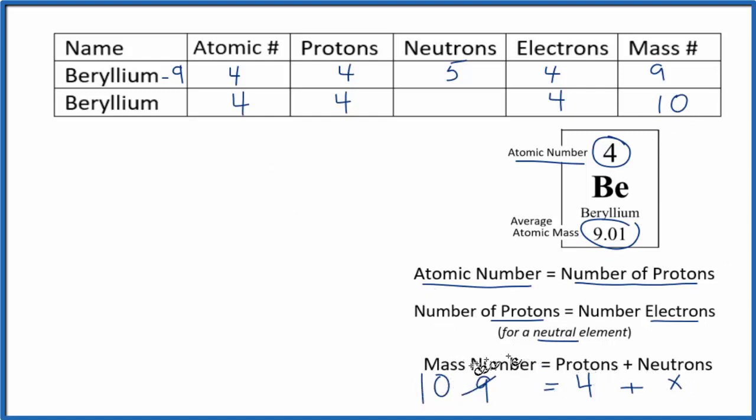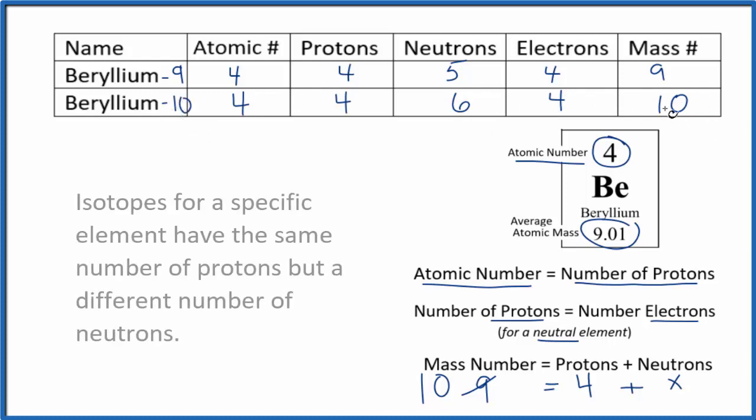Something plus four gives us ten. Six plus four gives us the ten for the mass number. This is beryllium-10, and this is an isotope. So when you look at isotopes, the only difference is the number of neutrons, and therefore the mass number.